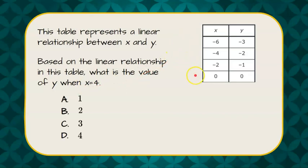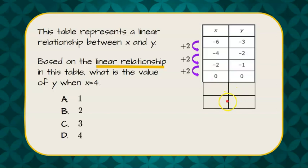So we're told it's a linear relationship, which means that we have a constant rate of change. We're noticing here from negative 6 to negative 4, add 2, and that's going to continue since it's a linear relationship. So we're going to add some rows to our table.